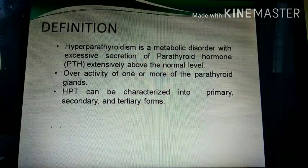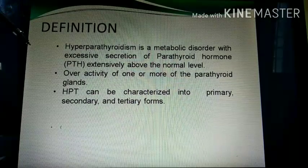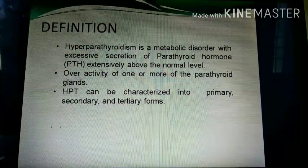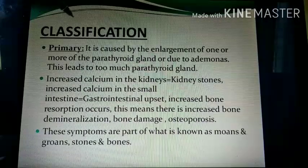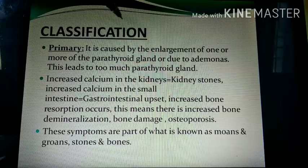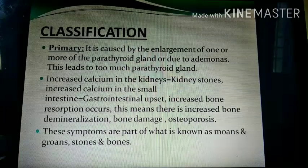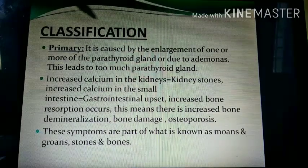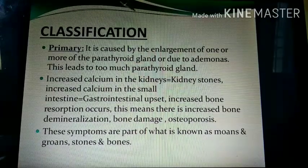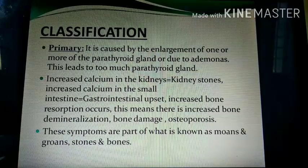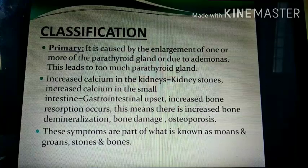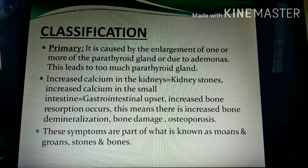Hyperparathyroidism can be divided into primary, secondary, and tertiary forms. In primary hyperparathyroidism, the parathyroid gland enlarges due to hyperplasia or adenomas. This enlargement of one or more parathyroid glands causes the cells to release too much parathyroid hormone.